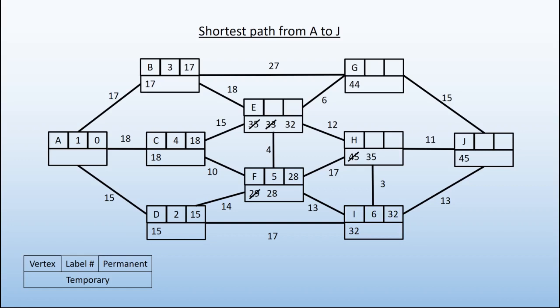The next lowest is E with that 32 we saw earlier. This is the seventh vertex to be labeled. Its permanent label is 32.